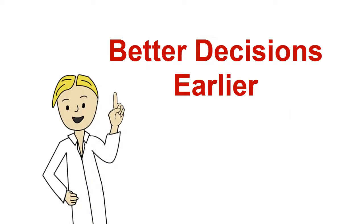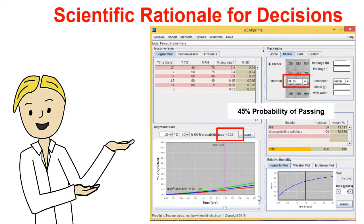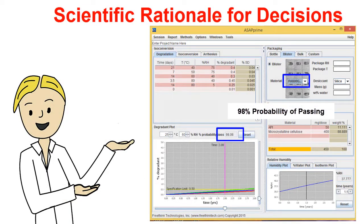ASAP Prime allows companies to make better decisions earlier in the development process. It can help make regulatory packages more robust by providing scientific rationale for decisions.